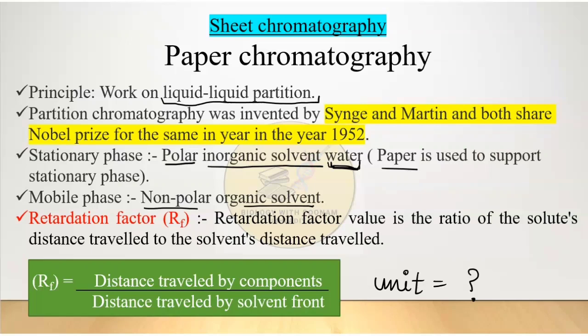In paper chromatography, an important concept is the retardation factor, or Rf value. The Rf value is defined as the ratio of the distance traveled by the solute (component) to the distance traveled by the solvent front. This gives us a characteristic value for each component under given conditions.